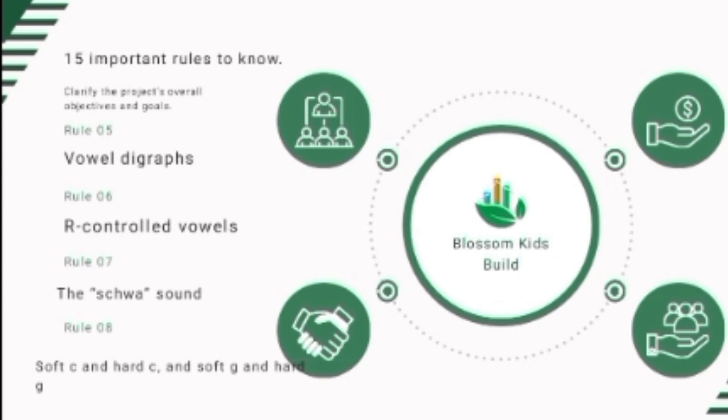Sometimes two vowels work together to form a new sound — this is called a diphthong. For example, the word 'cloud' — the O-U creates a new sound together. Another example is 'boy' — O-Y. These are diphthongs. If you follow this lesson in the resources provided, you'll see the practical way to teach your child to read.